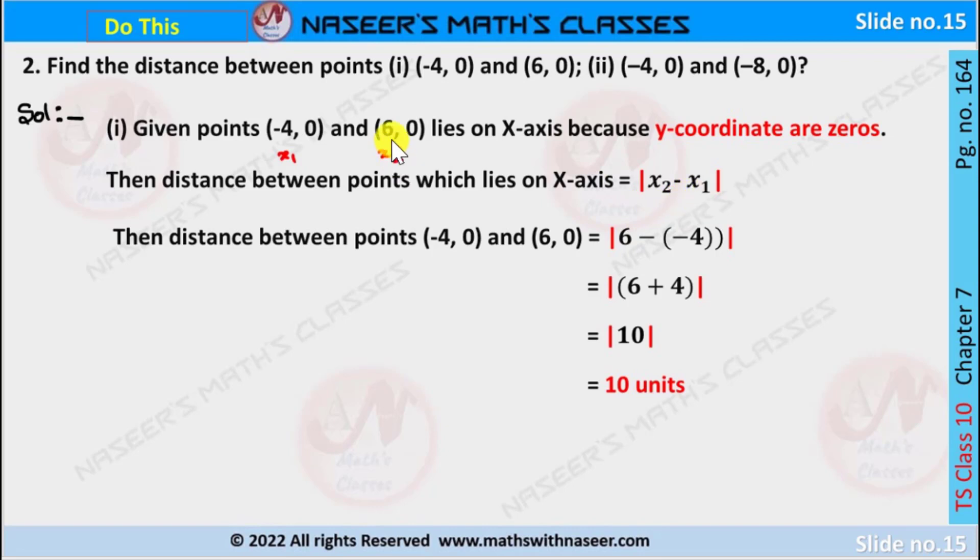Here x₂ value is 6 and x₁ value is -4. Now we substitute the values of x₂ and x₁. Then we can write it as |6 - (-4)|. Here minus into minus is plus, then we can write 6 + 4.